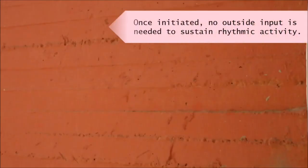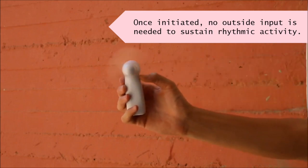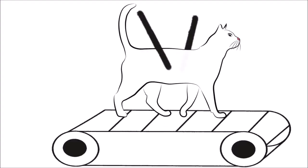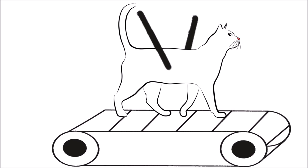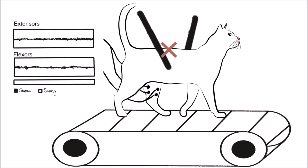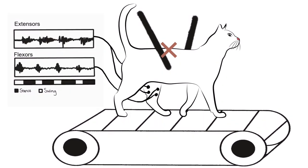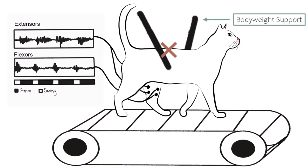Once initiated, CPGs independently sustain rhythmic activity. Evidence of CPGs was first observed in animal studies. In cats, researchers severed the spinal cord at a specific location and examined muscle activity. Although there was no input from the brain, they found cats were able to walk on a treadmill provided body weight support.